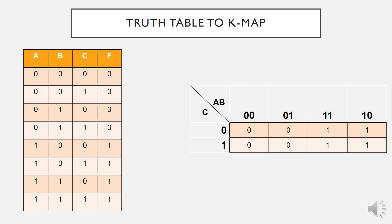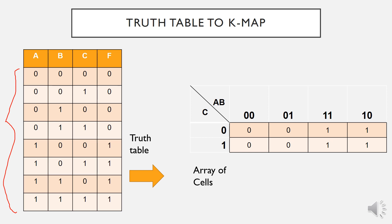A K-Map is actually similar to a truth table because it presents all the possible combinations of input variables and the output variable. Instead of being organized into rows like a truth table, the K-Map is an array of cells in which each cell represents a binary value of the input variable. For example, the input variables A, B, and C with value 0, 0, 0 can be mapped into the K-Map.